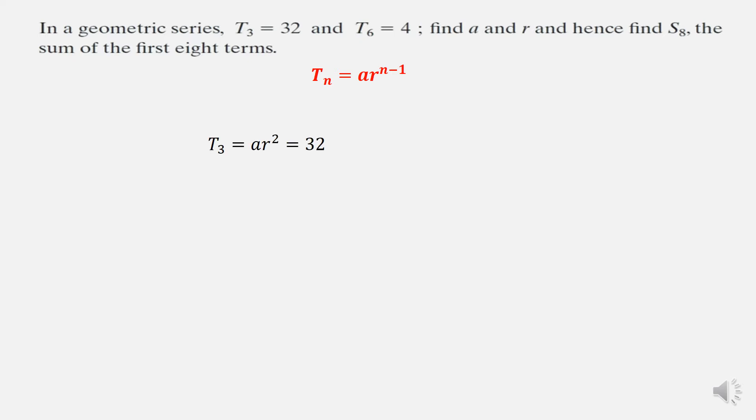So t3 is equal to a times r to the power of 3 minus 1, which gives 2. So the power is 1 less than the term. So ar squared equals 32. And for t6 we get ar to the power of 5 equals 4. So here we've got two equations with two unknowns, a and r. So we're going to use a form of simultaneous equations. What I'm going to do for both is rearrange to give a equals. So a equals 32 divided by r squared from the first one, and a equals 4 divided by r to the power of 5 from the second one. Now we can put two of the same things equal to each other. So equate the two expressions for a. 32 over r squared equals 4 over r to the power of 5. And now we're going to solve for r.